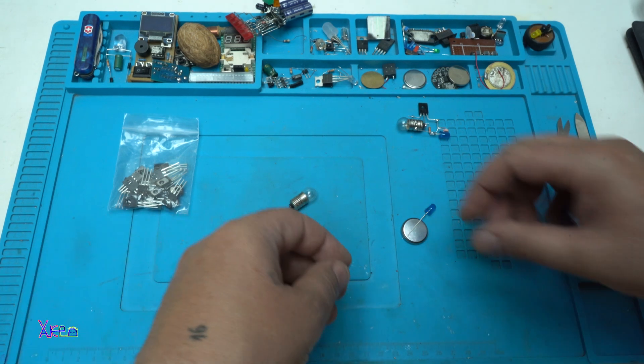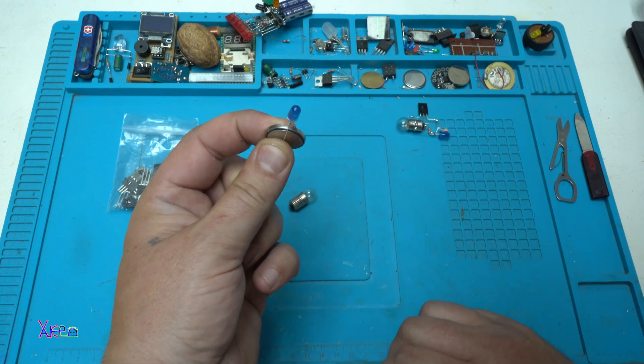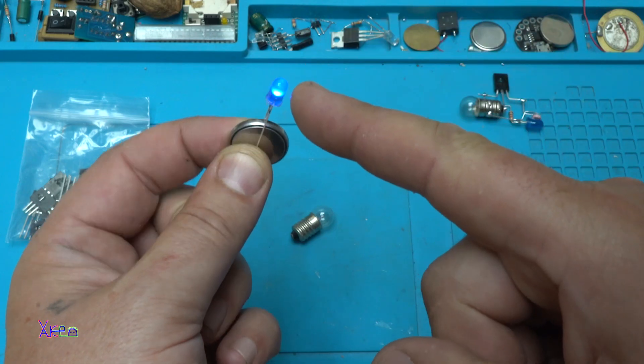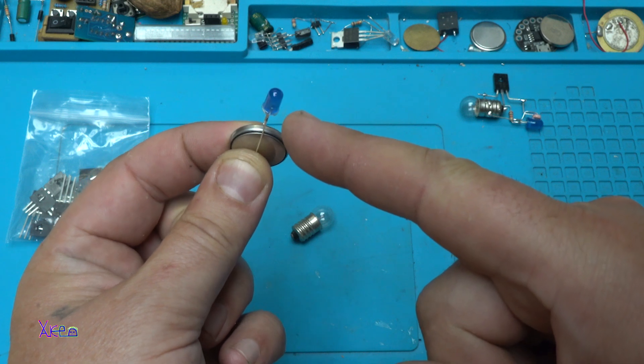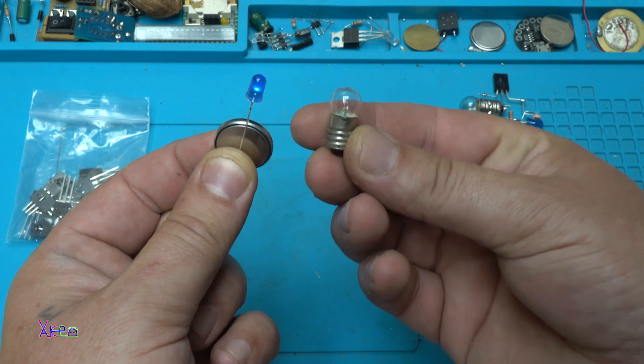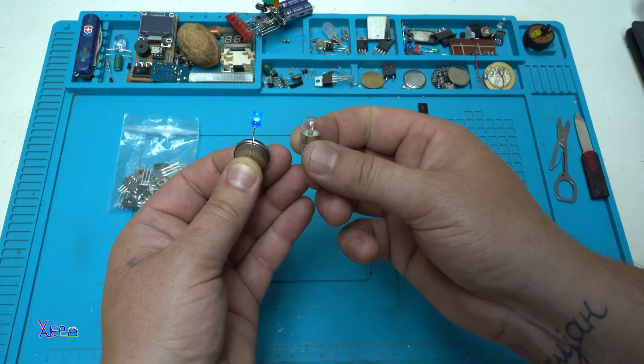Hello Hiptubers and welcome back to my channel. In today's video I will show you how you can make a simple circuit where a self-blinking LED like this will control this ordinary light bulb to blink just like that.